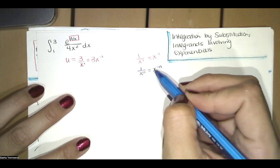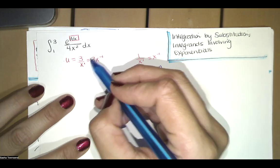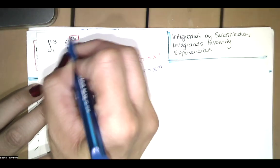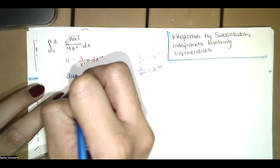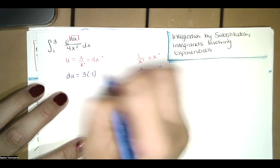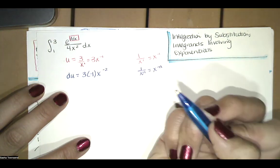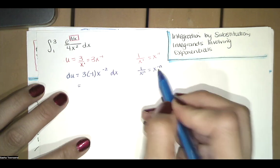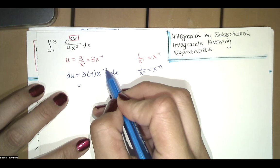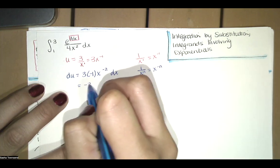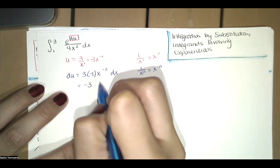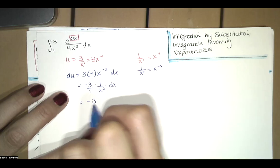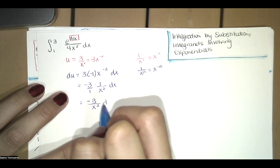If you have 1 over x to the n, that's the same as x to the negative n. If we rewrite u as 3 times x to the negative first, we can use the power rule to take the derivative. So du is 3 times the exponent times x to the one less power — negative 1 minus 1 is negative 2 — times the derivative of the inside. We can rewrite x to the negative 2 as 1 divided by x squared, giving us negative 3 divided by x squared dx as our du.